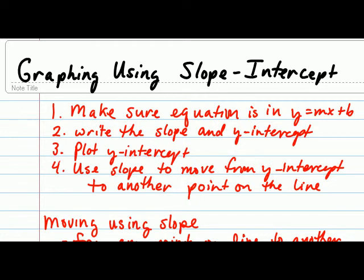Let's look at graphing lines using the slope-intercept method. To use this method, we first of all need to make sure our equation is in the slope-intercept form, which is the y equals mx plus b form.